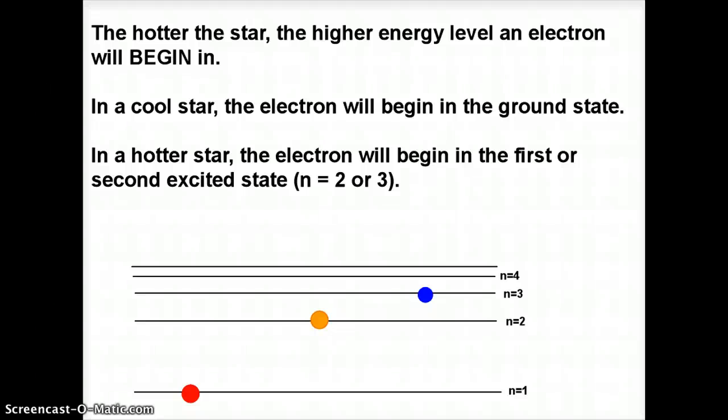So in the coolest stars, the red ones, the ones that are like 3,000 degrees or something like that, you're going to start with the electron in the N equals 1 state. It will be in the ground state. In a slightly warmer star, like the sun, kind of yellowish-orange, then we'll begin in the second state, N equals 2. And in a very hot star, it might begin in N equals 3 or even higher. So the temperature tells you where it's going to start.